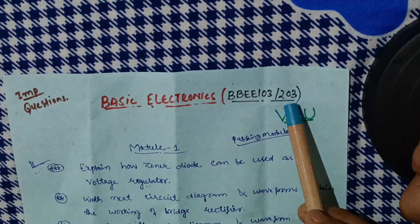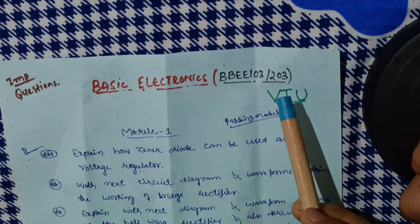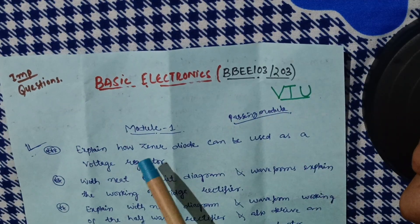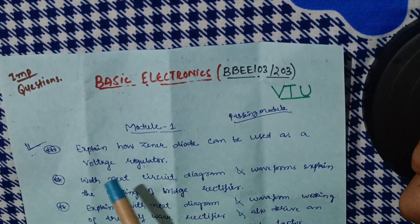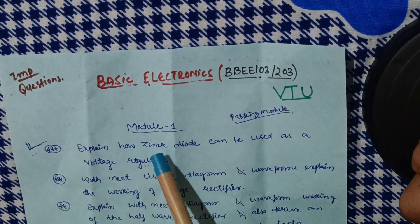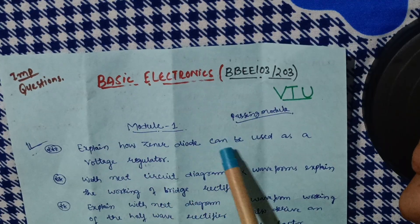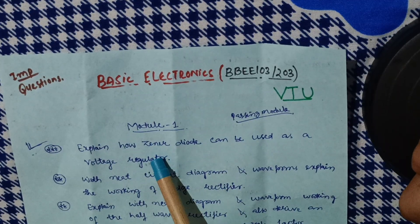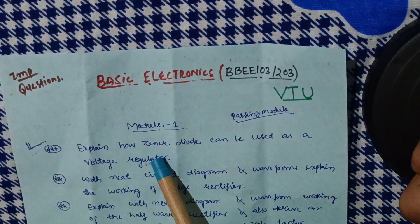So in module one, my dear friends, you have to cover some important questions which I have mentioned here. First of all, explain how Zener diode can be used as a voltage regulator. It is one of the most important questions — I call it the super important question as far as module one is concerned.